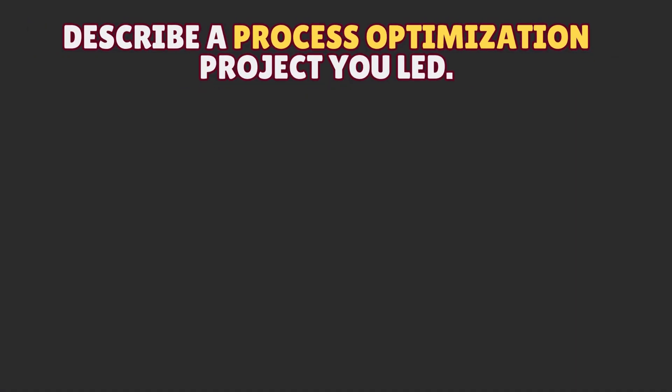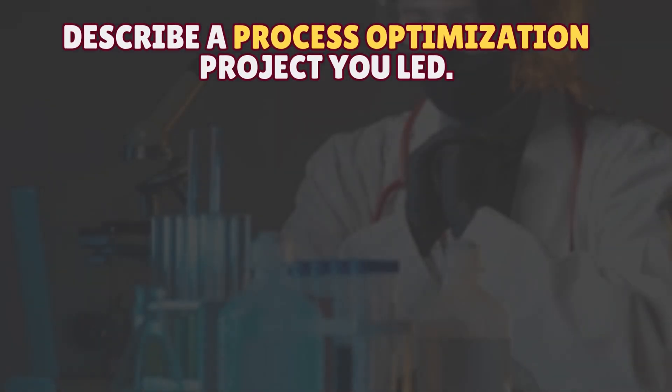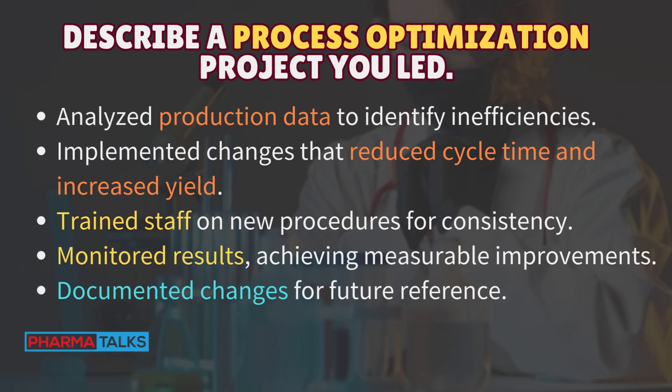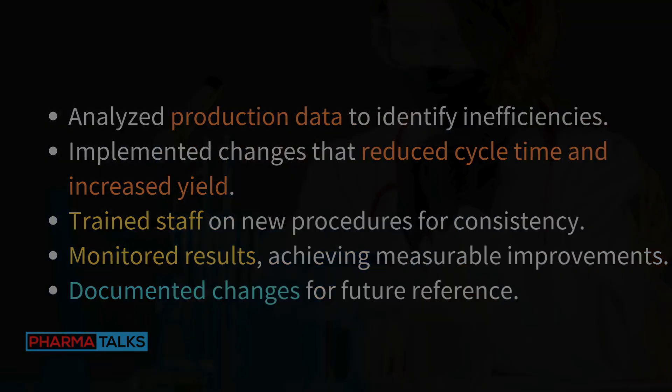Describe a process optimization project you led: Analyze production data to identify inefficiencies. Implement changes that reduce cycle time and increase yield. Train staff on new procedures for consistency. Monitor results achieving measurable improvements. Document changes for future reference.